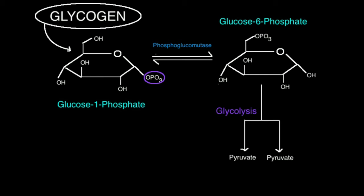Because we're going to translocate the phosphate up here to the 6-position, we're going to use an enzyme that would be a mutase — specifically, phosphoglucomutase. Phosphoglucomutase reversibly converts glucose 1-phosphate to glucose 6-phosphate. This glucose 6-phosphate can then go through glycolysis, which is a pathway we've covered already, and ultimately be converted into two molecules of pyruvate.